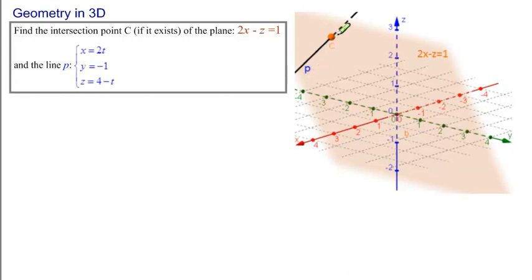And now we're looking for the intersection of the line and the plane. So the point C lies on the line P. So we need to find a t value for C.